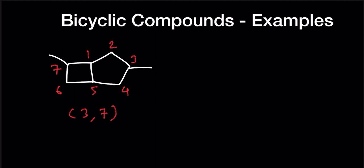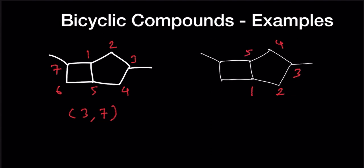Let us redraw this structure once again. Let us start the numbering from the bottom: 1, 2, 3, 4, 5, 6, 7. Here we are getting 3,6 as our positions for the substituents. So therefore this is more preferred than the other one — 3,6 is correct.